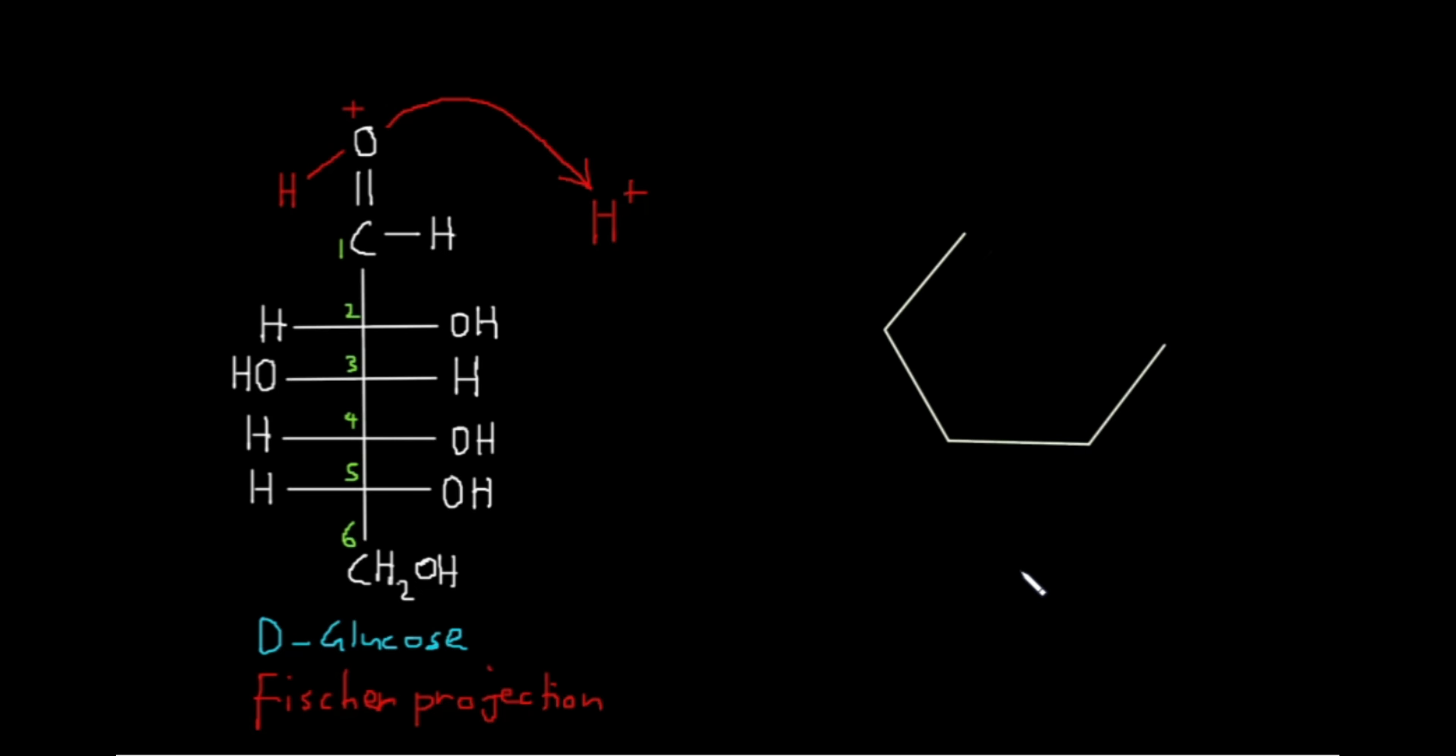Let's try to label these carbon atoms based on what we did in the straight chain structure. This is the first carbon, this is the second, the third, the fourth, and this is the fifth carbon.